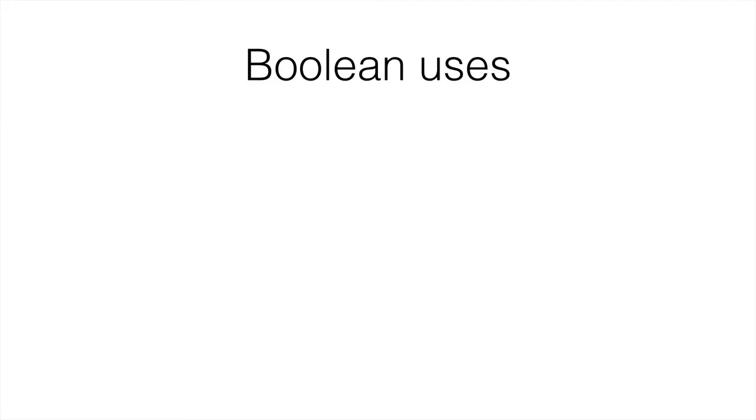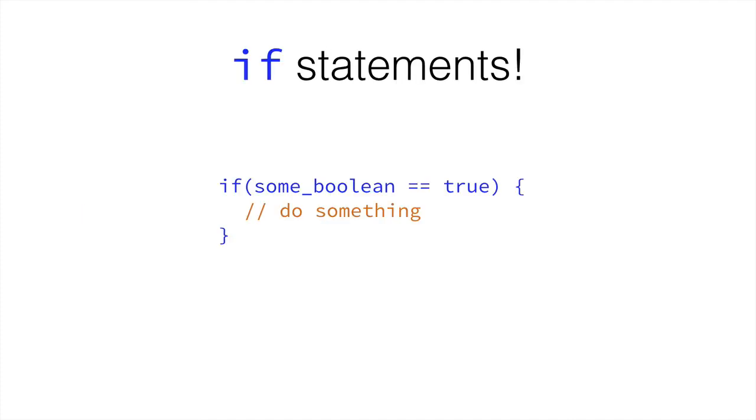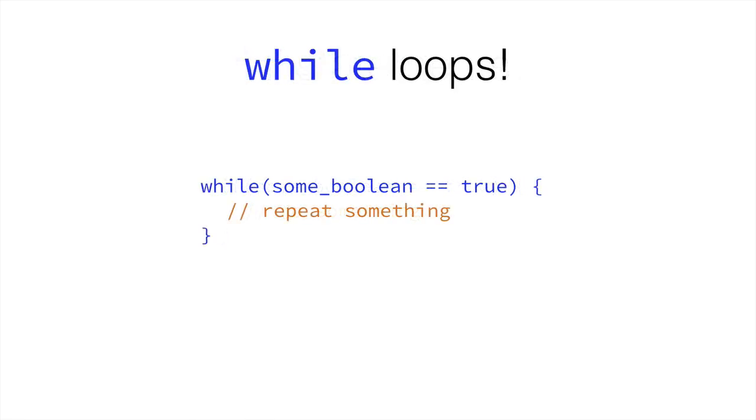So we use booleans in if statements, and we've seen that between the brackets of the if statement. Or while loops, we've seen that between the brackets of the while loop, such as in here. If some boolean is true, then we do something. And similarly, while some boolean is true, we repeat something many times.